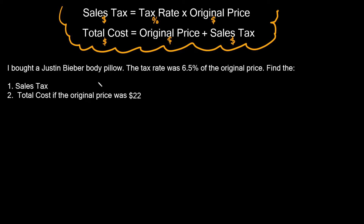Let's jump into this first example. I bought a Justin Bieber body pillow. The tax rate was 6.5% of the original price. Find the sales tax and the total cost if the original price was twenty-two dollars. So to find the sales tax, we use the formula: sales tax equals tax rate times original price. The tax rate in this problem is 6.5%, but we can't plug in 6.5% directly — we first have to turn it into a decimal.